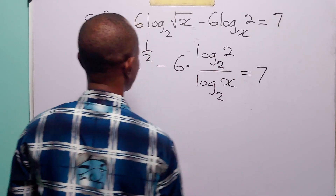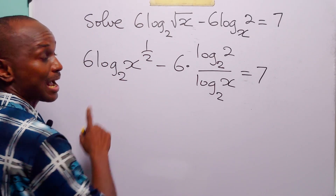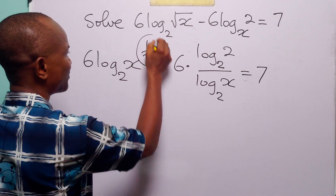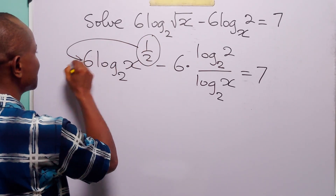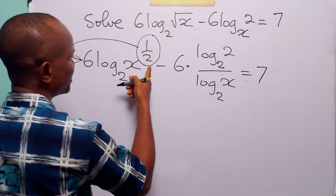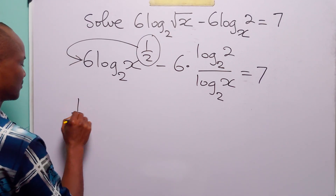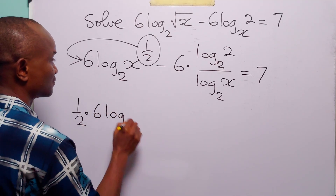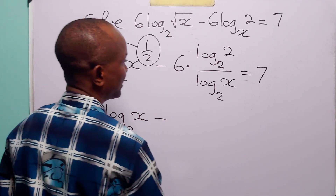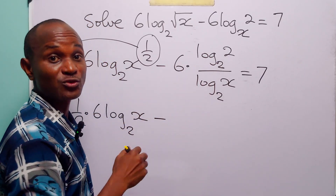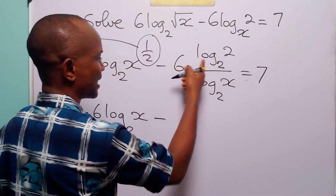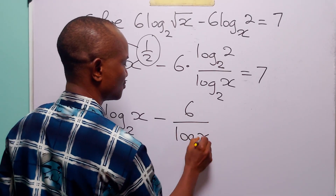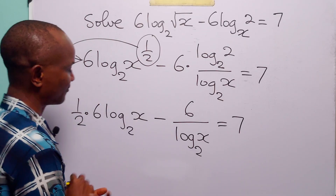And of course this is still equal to 7. Now we apply the power rule of logarithms — the rule that says we can bring down this power to the front of the log term to become a multiplier. When we do that, we have half times 6 times log to base 2 of x. And log to base 2 of 2 is equal to 1, so here we have 6 times 1 divided by log to base 2 of x. And this is equal to 7.